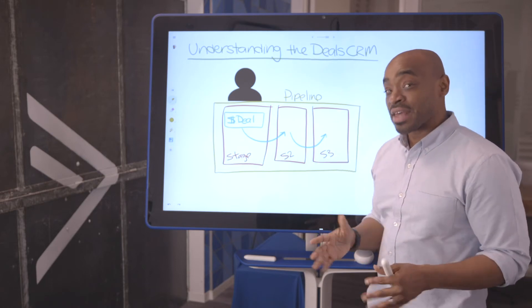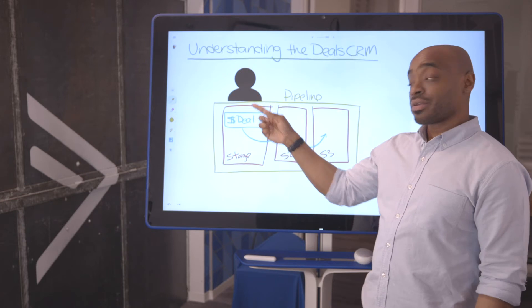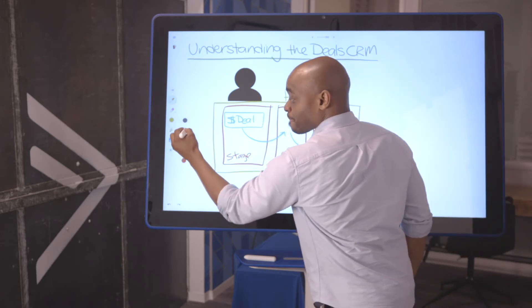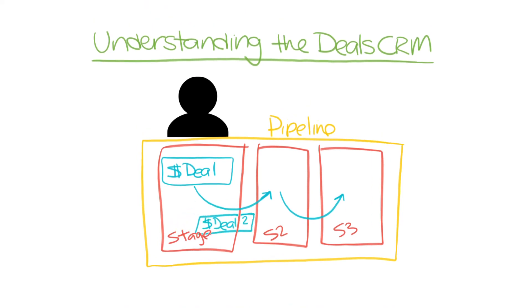And the reason why this is so important for you to grasp is because one contact record can have multiple deals. Deal number two, and this deal could be on the same pipeline or it could be on another pipeline.